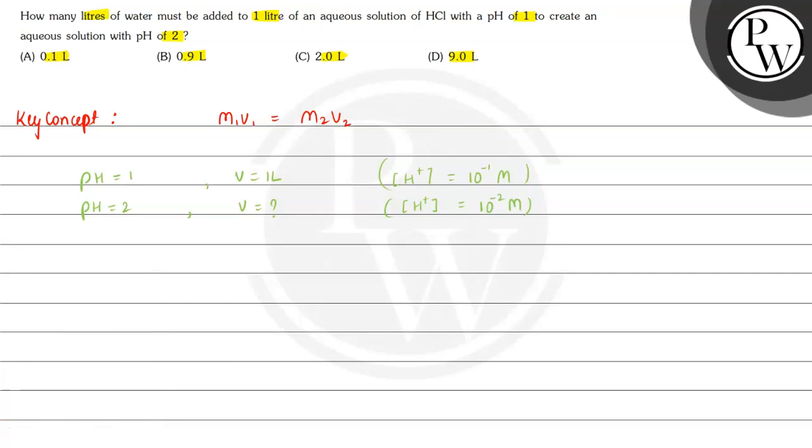So here we will substitute the values. M1 is 10 to the power minus 1, multiplied by V1 which is 1 liter, equals M2 which is 10 to the power minus 2, multiplied by V2.